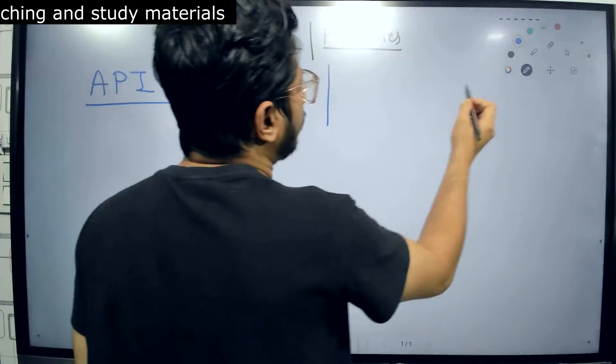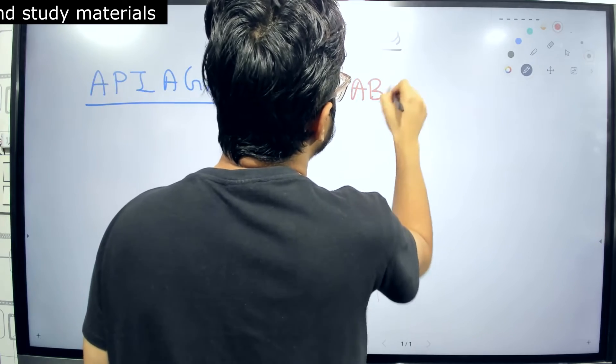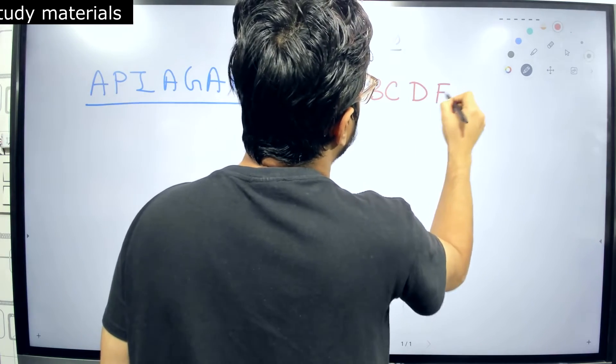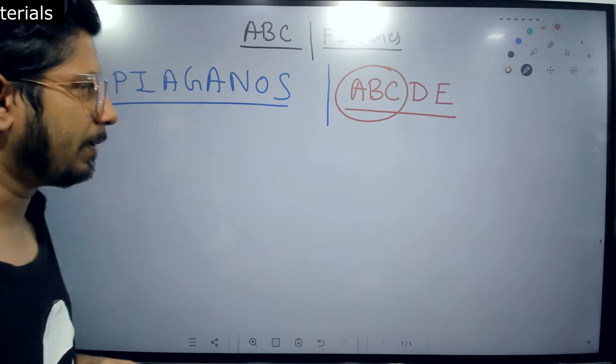APIAGANOS is what you need to remember. Along with that obviously you need to remember the ABC model of flowering, and that is simple: A, B, C, D, and E also, but mainly the ABC part.